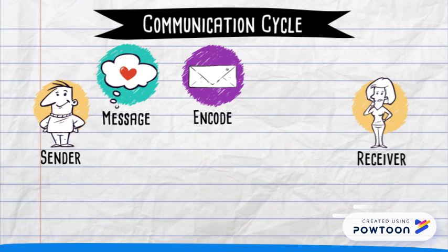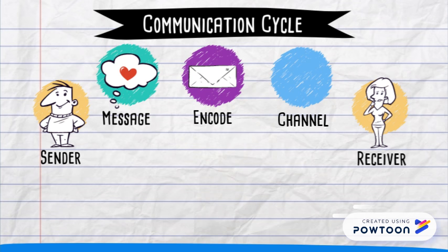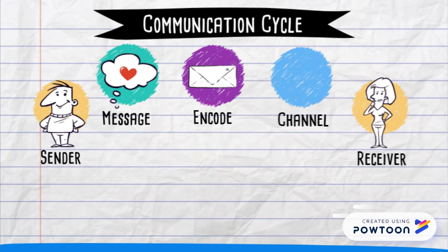This brings us to our fifth component, and that is the channel, which is simply defined as how the receiver takes in the message. Human beings have five channels — think about what else you have five of. If you guessed your five senses, you'd be right. Hearing, seeing, and feeling are the primary ways in which human beings take in information. And in this case, if it's a love letter, she will be using sight.